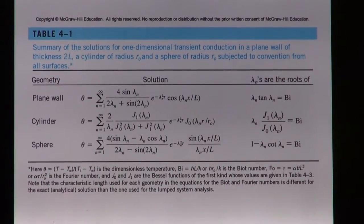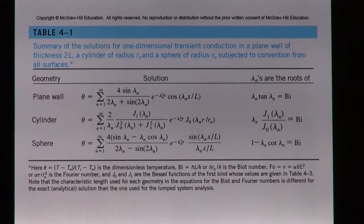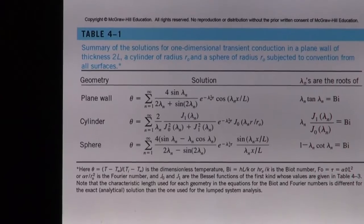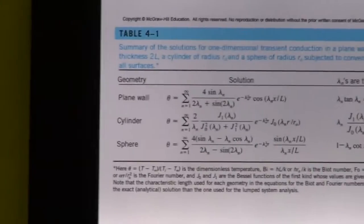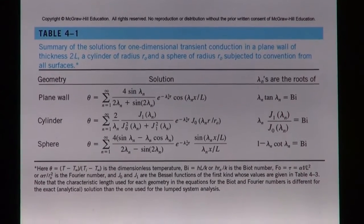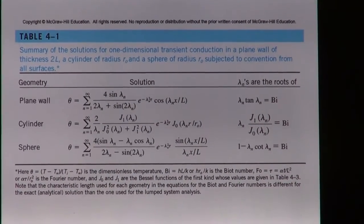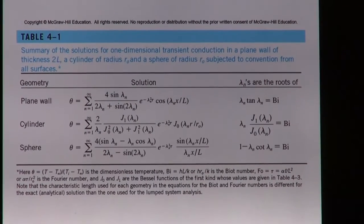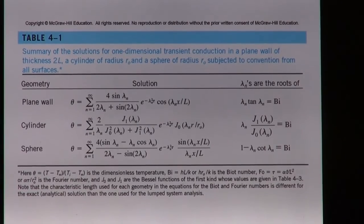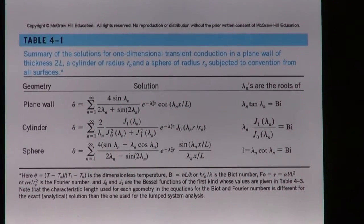Remember the Biot number here is not volume divided by surface area — that is only valid for the lumped system approach. From the table, the Biot number for this geometry is defined as h·r₀/k. So be careful not to confuse the two definitions.